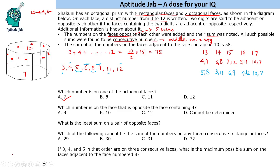Now let us answer the questions. First: which number is on the face opposite to the face containing 4? The answer could be either 9 (in the first arrangement) or 12 (in the second arrangement) — so there are 2 possibilities and we cannot determine it uniquely. Second question: what is the least sum on a pair of opposite faces? That is clearly 13.